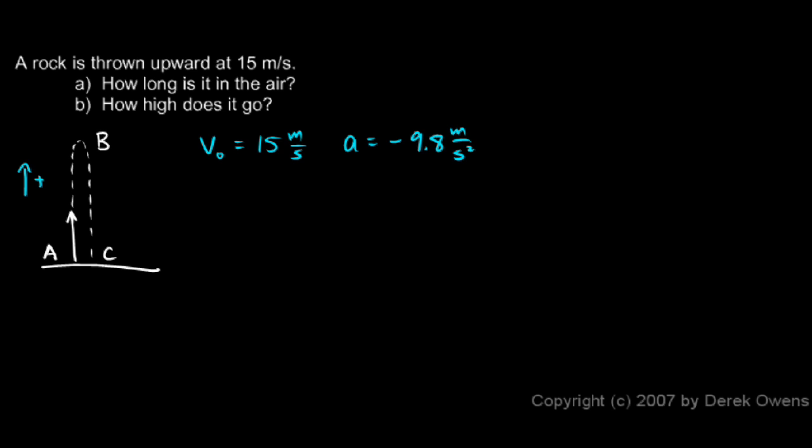Now note we're not concerned with the throwing of the object. We're concerned with the moment right after it's released to the moment right before it hits. It hits the ground and stops, but its final speed would be the impact speed and its initial speed would be the speed at which it is thrown.